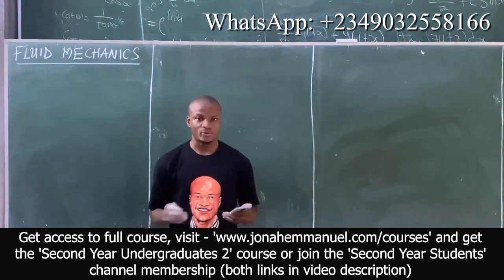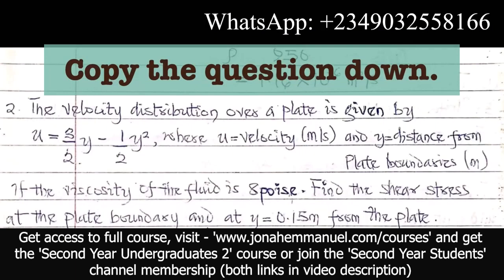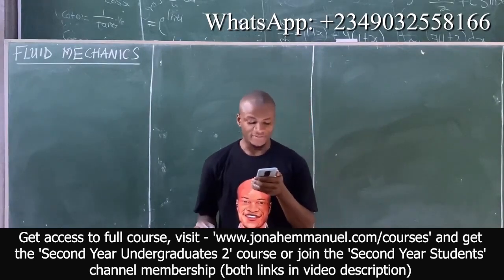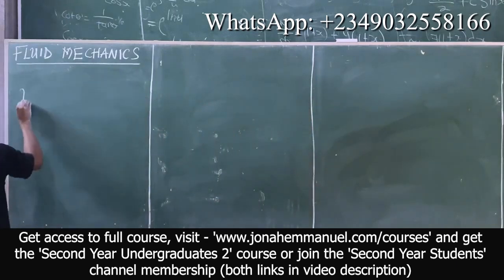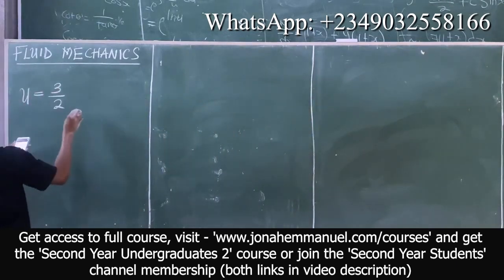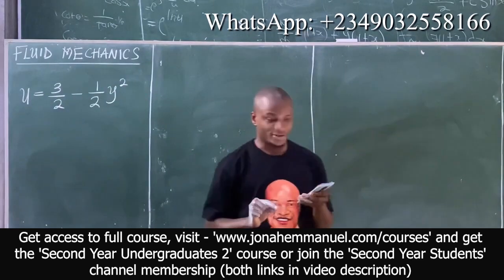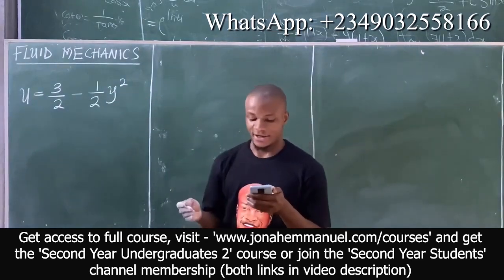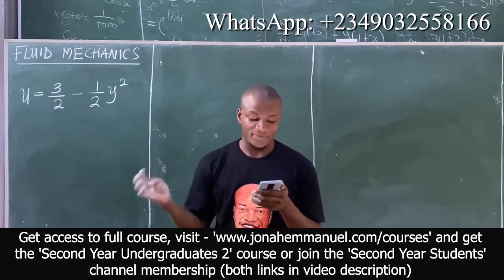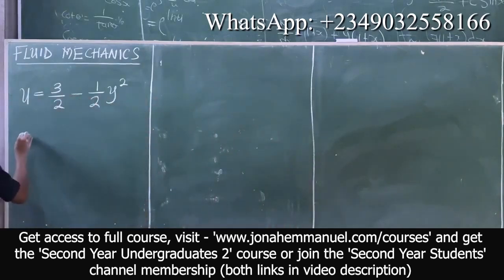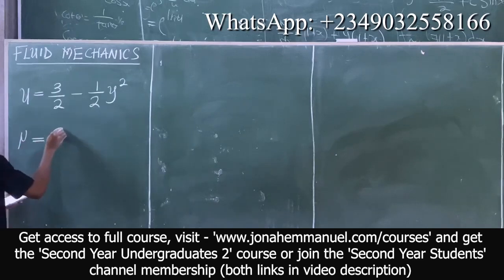Let's look at yet another example. The velocity distribution over a plate is given by the equation U equal to 3 over 2 Y minus 1 over 2 Y squared, where U is velocity in meter per second and Y is the distance from the plate boundary in meters. If the viscosity of the fluid is 8 poise — when we say poise, that should be dynamic viscosity — as 8 poise.